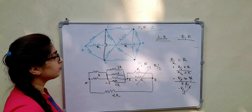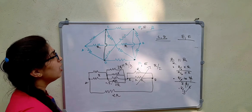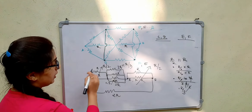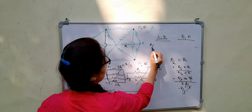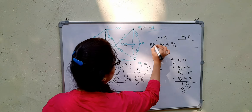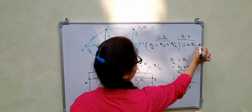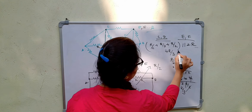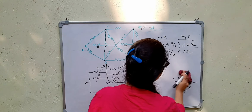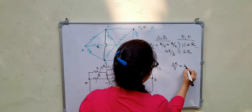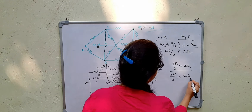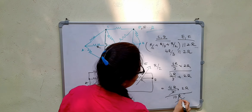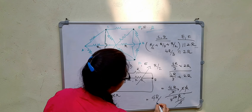The series path R/2 + R/3 + R/2 = 4R/3 is in parallel with the direct 2R resistor. So R_AB = (4R/3 × 2R) / (4R/3 + 2R) = (8R²/3) / (10R/3) = 8R/10 = 4R/5. The equivalent resistance is 4R/5.